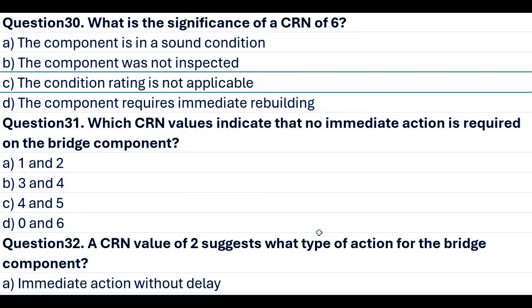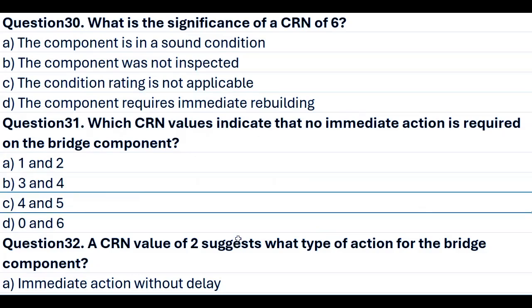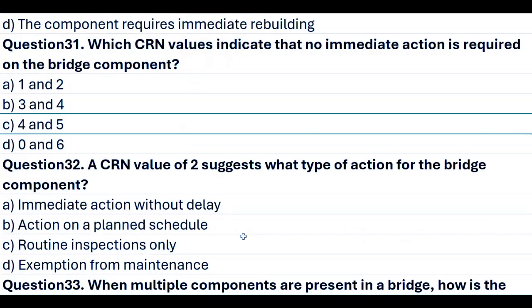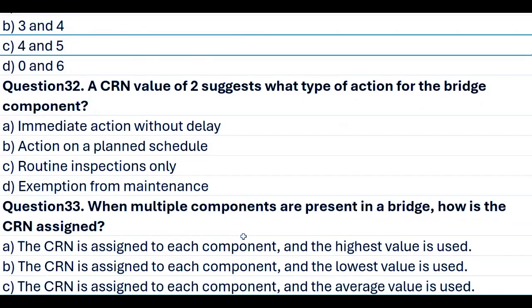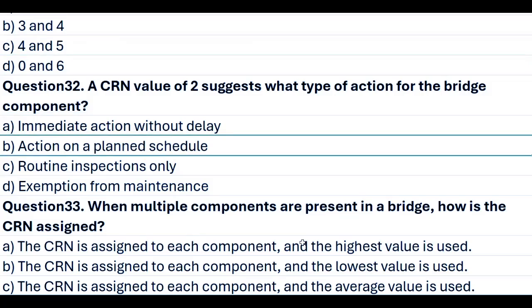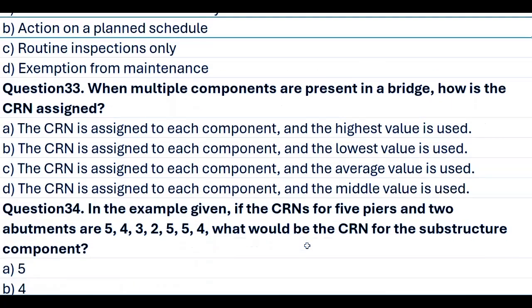Question 31. Which CRN values indicate that no immediate action is required on the bridge component? A. 1 and 2. B. 3 and 4. C. 4 and 5. D. 0 and 6. Answer C. 4 and 5. Question 32. A CRN value of 2 suggests what type of action for the bridge component? A. Immediate action without delay. B. Action on a planned schedule. C. Routine inspections only. D. Exemption from maintenance. Answer B. Action on a planned schedule.